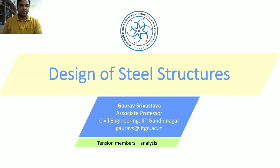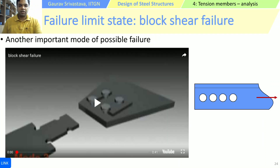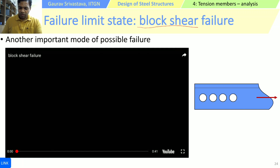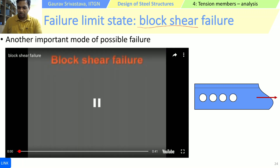In this session we will continue learning about the analysis of tension members and we will learn about one more possible failure limit state. We have learnt only two: one is yielding of the gross section and the other is rupture at the net section. There is one more limit state of failure which can become very important in certain cases and this one is called block shear failure. We will watch a small video to see how block shear failure can happen.